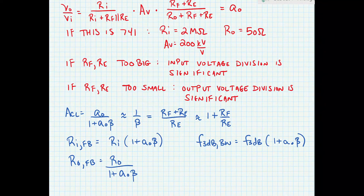That was an example of a series-shunt feedback connection, which makes a voltage amplifier. In the next video we're going to look at a shunt-shunt connection.